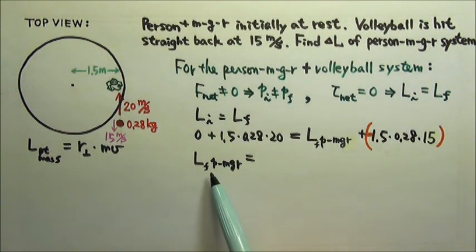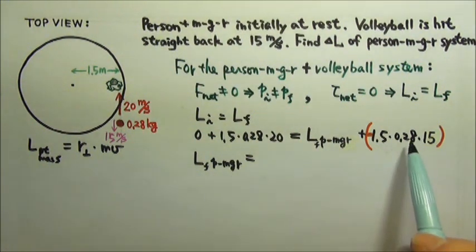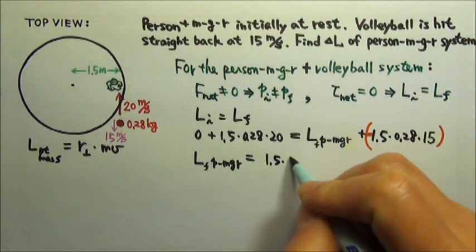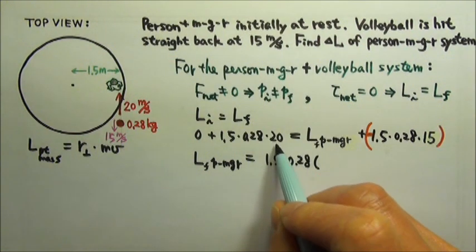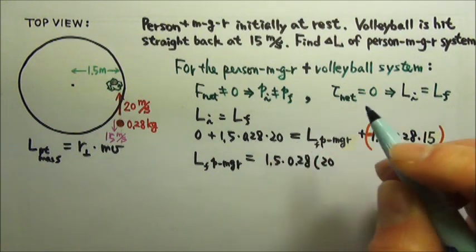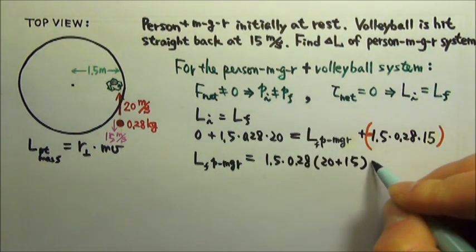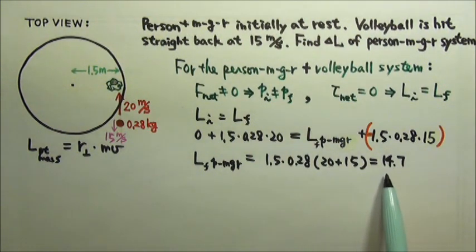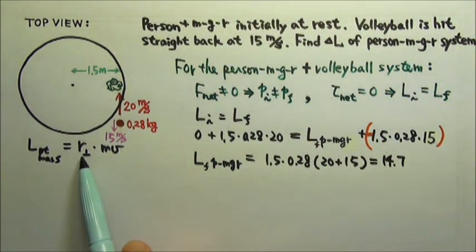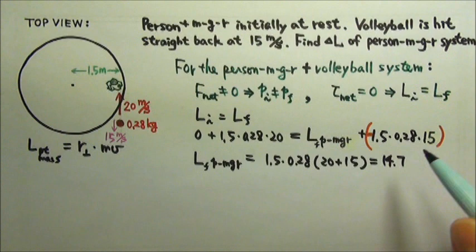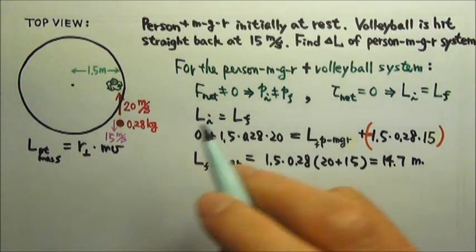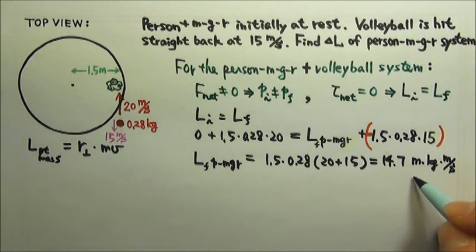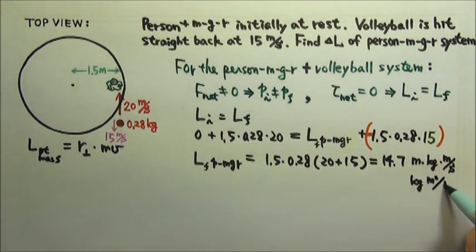To solve for the final angular momentum of the person's merry-go-round system, we move the volleyball term over and factor out 1.5 times 0.28. On this side we have 20, and when we move the other term over we have plus 15, giving us 14.7. The unit for angular momentum is r perpendicular times mv — that's meters times kilograms times meters per second. Combining the meters, we get kilograms meters squared per second.